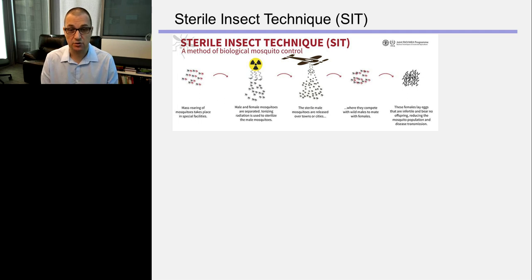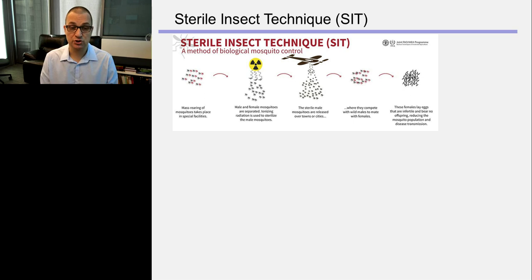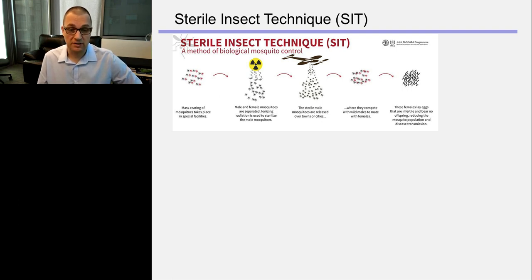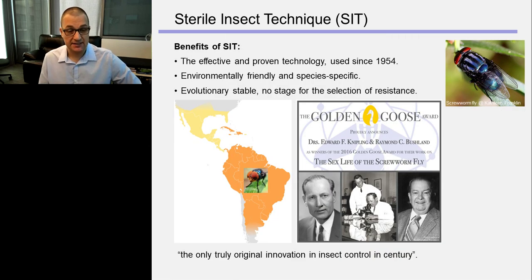The sterile males are then distributed into the local population. These sterile males go and find females, mate with them, and the females lay eggs — but nothing hatches from those eggs. If you do this multiple times and release huge numbers of mosquitoes each time, you can reduce the insect population. This method, called SIT, is species-specific, so it works only for one particular species. It's much more precise, and it has been proven effective since 1952.